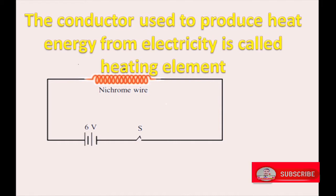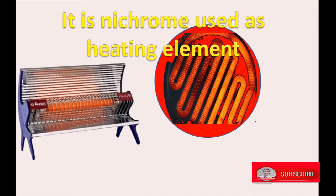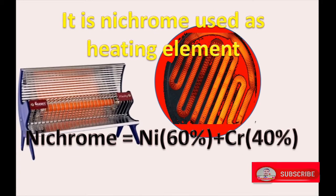Nichrome wire gives heat energy due to passage of electric current. Nichrome is used as a heating element, which is made up of nickel 60% and chromium 40%. The percentage composition of nickel and chromium in nichrome depends upon the type of heating element or the purpose for which the heating element is used.